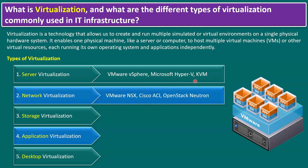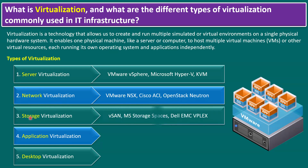For network virtualization, examples include VMware NSX, Cisco ACI, and OpenStack Neutron. Not limited to these three — in Nutanix, for example, the network virtualization product is called Nutanix Flow.